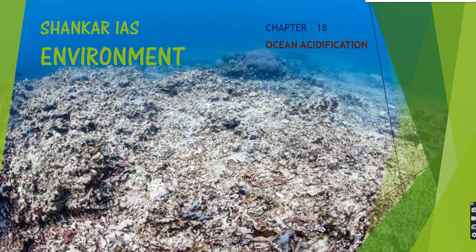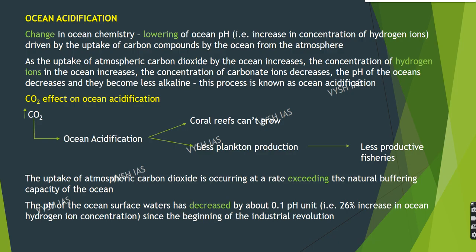This is Chapter 18: Ocean Acidification, which is a primary concern for the environment and for all living organisms in the present scenario. Oceans are an important reservoir for carbon dioxide — they absorb one third of the carbon dioxide produced by human activity, thus buffering climate change. Ocean acidification is the change in ocean chemistry: the lowering of ocean pH, that is an increase in concentration of hydrogen ions, driven by the uptake of carbon compounds by the ocean from the atmosphere.